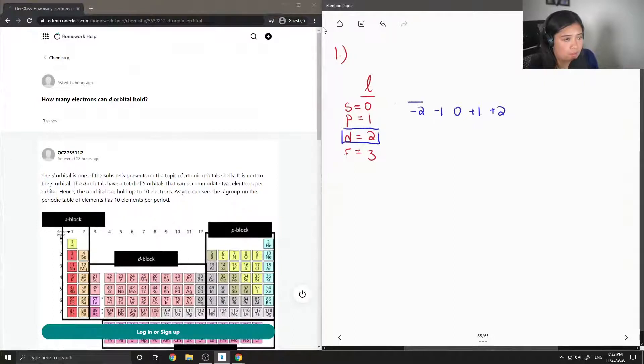Then I'll just show all the orbitals here. So if the d orbital had a full set of electrons, there will be 1, 2, 3, 4, 5, 6, 7, 8, 9, 10.